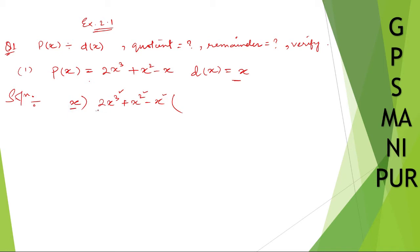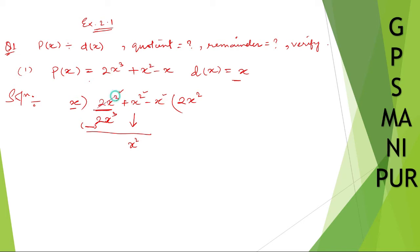Take the first term. How much do you need to multiply x to get 2x³? Multiply by 2x² — x into 2x² gives 2x³. Bring it down. Now change the sign: positive becomes negative, so they cancel each other and we get zero.